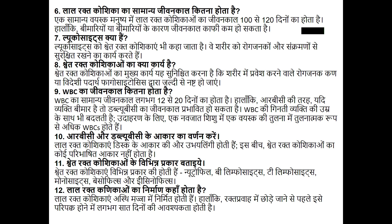Leukocytes (श्वेत रक्त कोशिकाएं) शरीर को रोगजनकों और संक्रमणों से सुरक्षित रखने का कार्य करती हैं। श्वेत रक्त कोशिकाओं का कार्य यह सुनिश्चित करना है कि शरीर में प्रवेश करने वाले रोगजनक या विदेशी पदार्थ Phagocytosis द्वारा जल्दी से नष्ट हो जाएं। WBC का जीवनकाल कितना होता है? WBC का सामान्य जीवनकाल लगभग 12 से 20 दिनों का होता है।